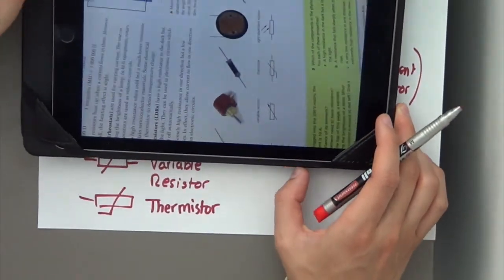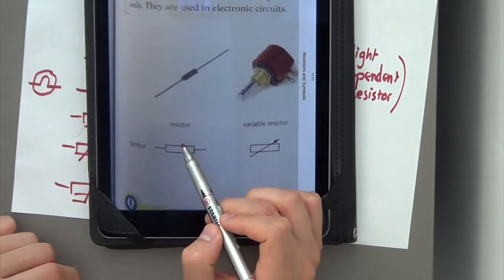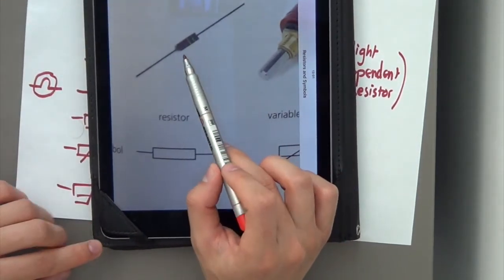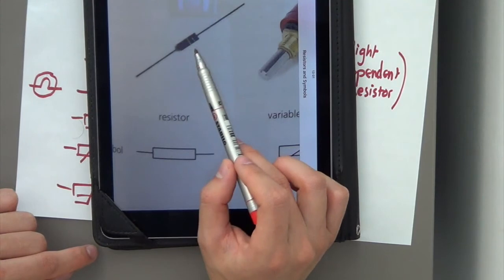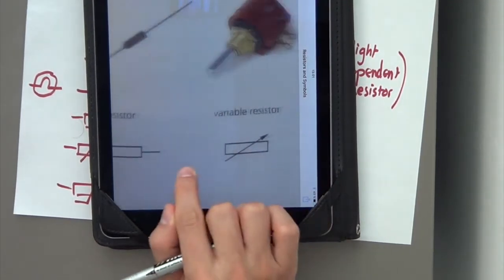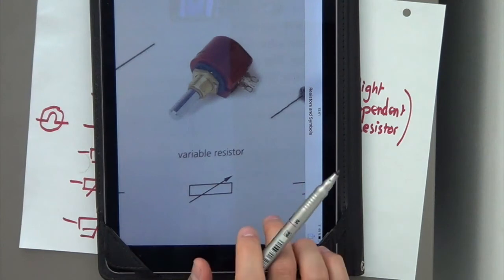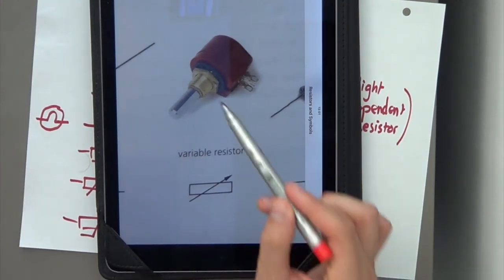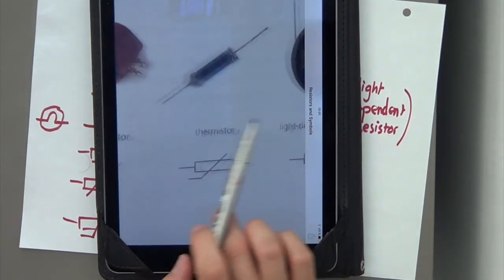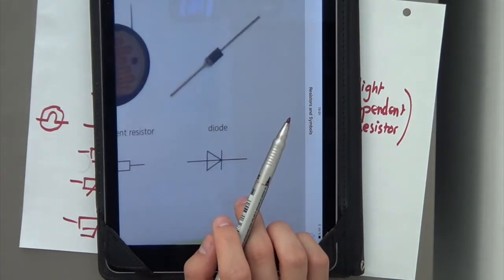Just to show you these things in real life, or what they look like in real life. A resistor looks like this. Generally, depending on the colours or the patterns, electricians can tell how much resistance each resistor has. It's what a variable resistor looks like in real life. Obviously, there's different variations of variable resistors, but you can see the symbol there. It's what a thermistor looks like in real life, a light-dependent resistor, and then a diode.